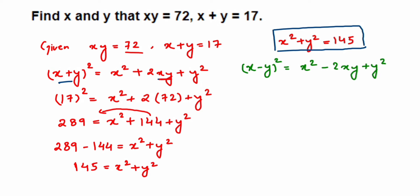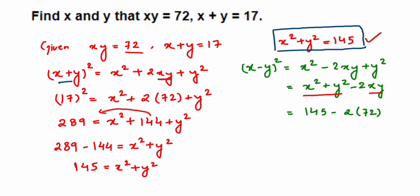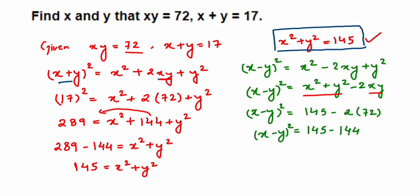Rearranging: (x − y)² = x² + y² − 2xy. We know x² + y² = 145 and xy = 72, so substituting: (x − y)² = 145 − 2(72) = 145 − 144.